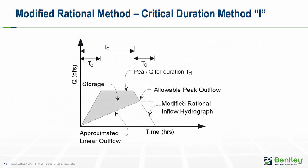Since the program calculates the storm duration automatically, it's really only feasible to have a single modified rational method catchment in your system. If you had multiple catchment areas, you could end up with a different critical storm duration for each one, which would mean different storms occurring at the same location — that doesn't make sense. This reinforces that the modified rational method is best suited for small, single drainage areas.